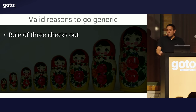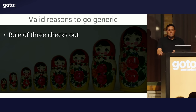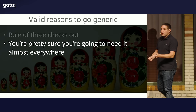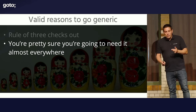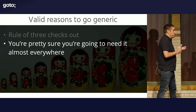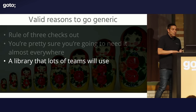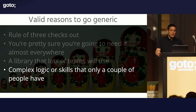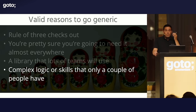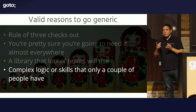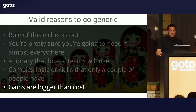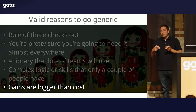Valid reasons to go generic: the rule of three checks out — is it the third time you're seeing something? You're pretty sure you'll need it almost everywhere — metrics, logging, tracing, security, a generic library for database access. It's a library that a lot of teams will use — basically the same point. Or complex logic that only a couple of people have — you can use a generic solution as encapsulation for this complex logic. Or when the gains are bigger than the cost, though that may be hard to make concrete at any point in a project.